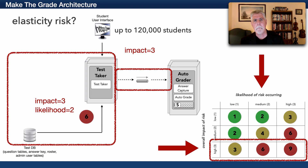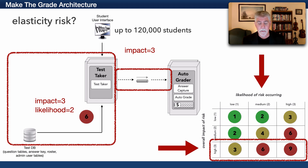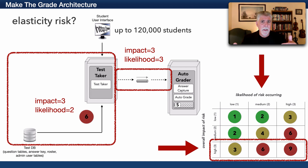Now let's look at the queue. What's the likelihood that the autograder won't be able to dequeue fast enough and the queue fills up? Since the autograder is grading and then writing to a database — and writes usually take longer than reads — I think the likelihood is 3. In high-volume testing mode, we won't keep up and that queue will fill up. That puts the risk at a 9.